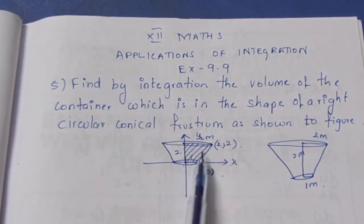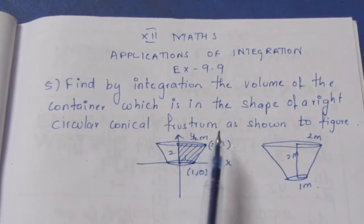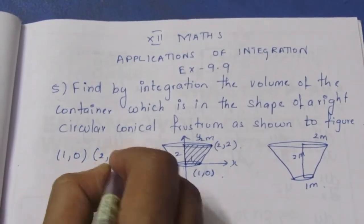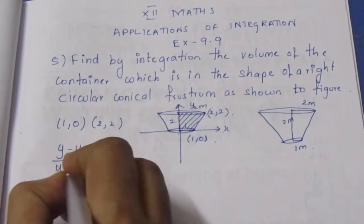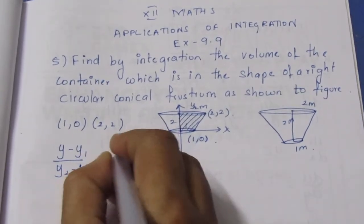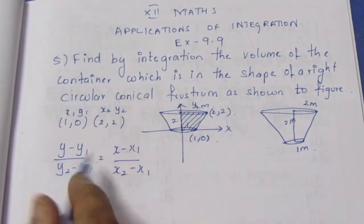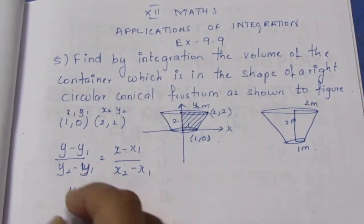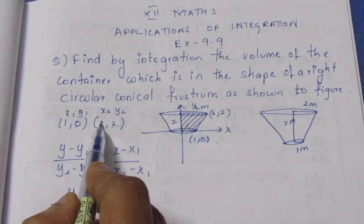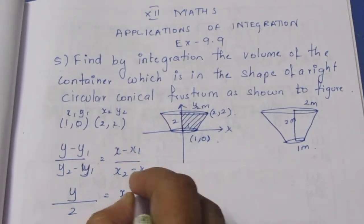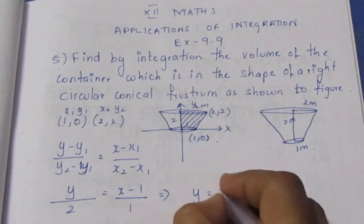We need to make an equation for this line. We need two points. Using the two-point equation: (y - y1)/(y2 - y1) = (x - x1)/(x2 - x1). Substituting: y2 - y1 = 2 - 0, and x - x1 = x - 1, x2 - x1 = 2 - 1. Cross multiplying gives y = 2x - 2.